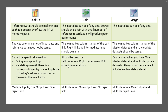In lookup you have multiple inputs, one output, and one reject link. Whereas in join you can have multiple inputs, one output, and no reject link. In merge you can have multiple inputs, one output, and multiple reject links — the number of reject links equals the number of update dataset links available in the job. So these are the basic key differences between lookup, join, and merge stage.